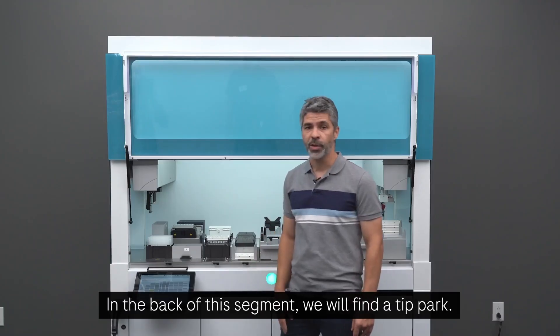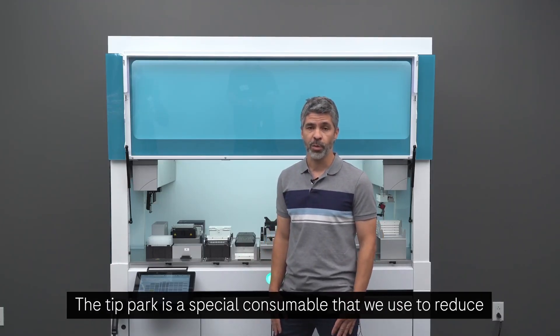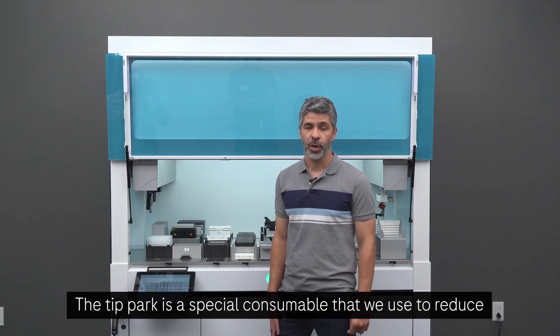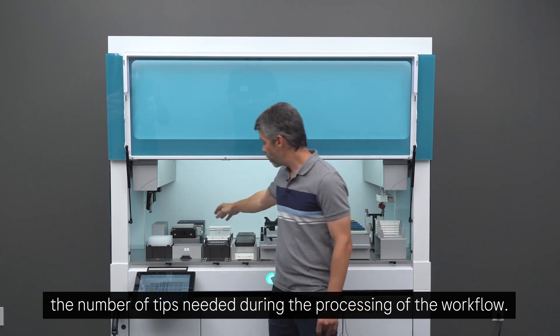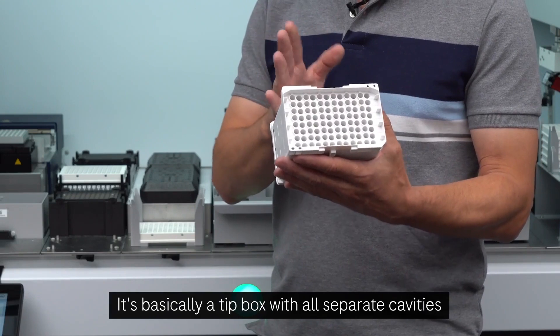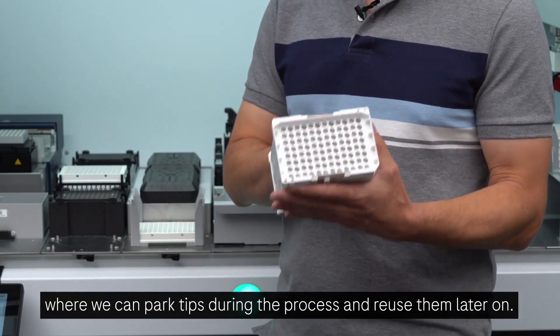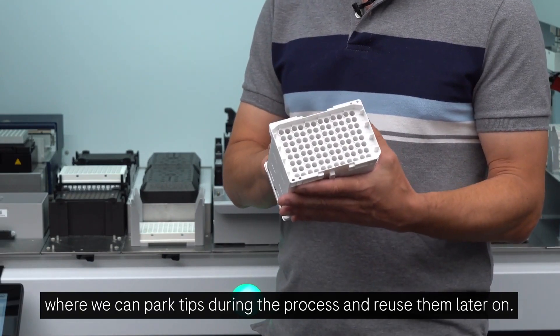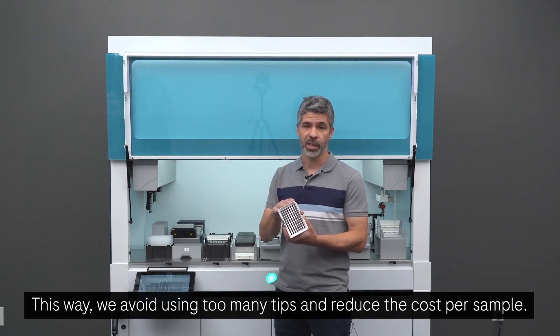In the back of this segment, we will find the tip park. The tip park is a special consumable that we use to reduce the number of tips needed during the processing of the workflow. It's basically a tip box with all separate cavities where we can park tips during the process and reuse them later on. This way, we avoid using too many tips and reduce the cost per sample.